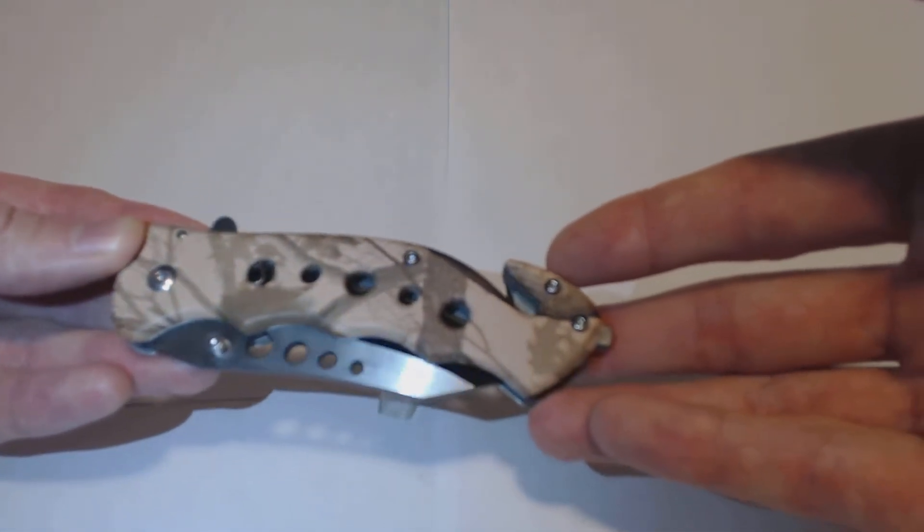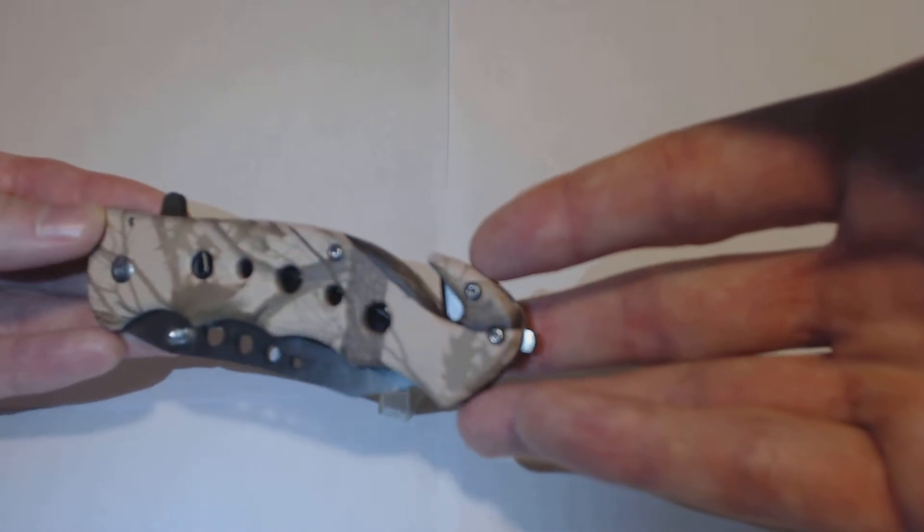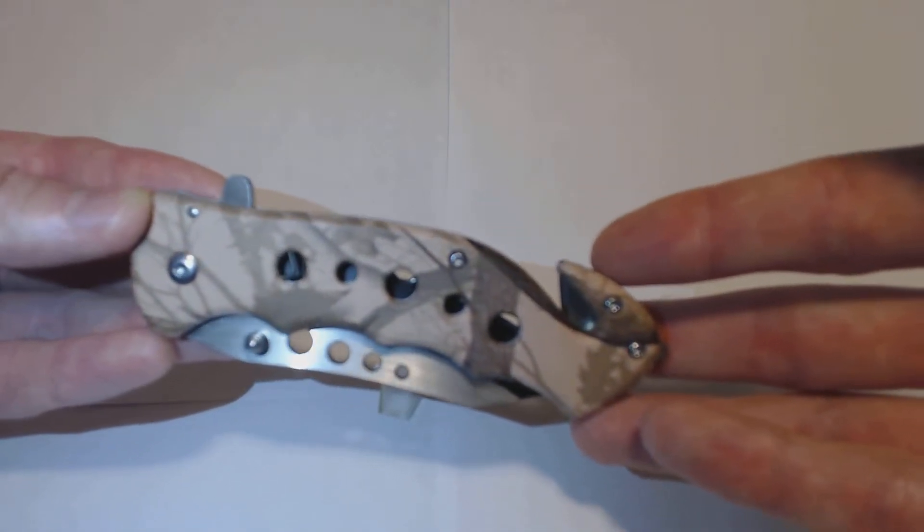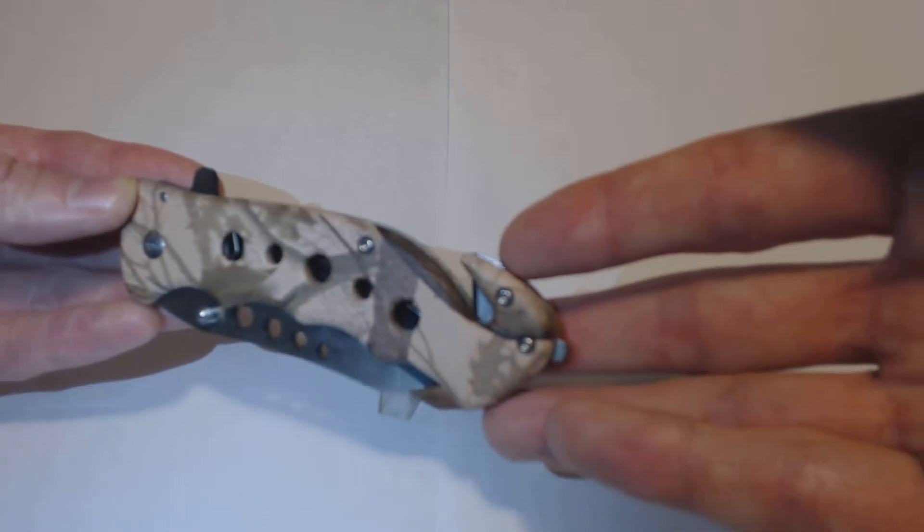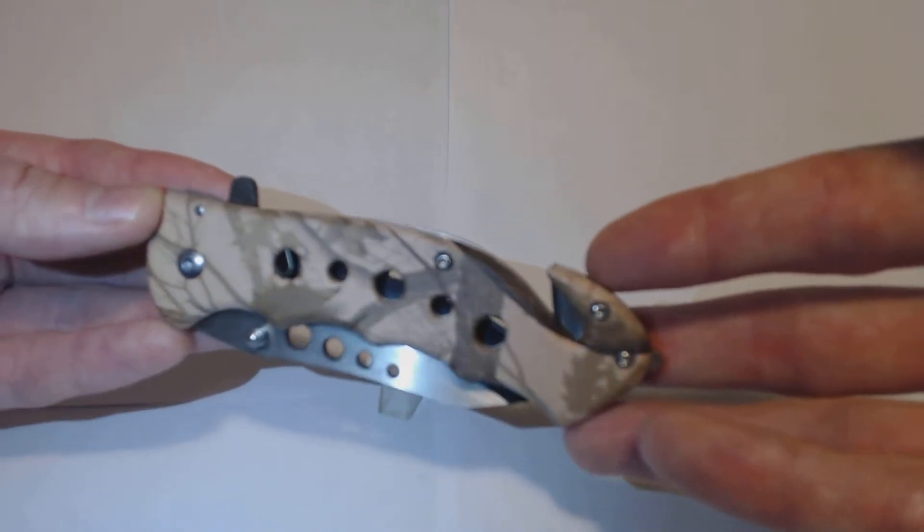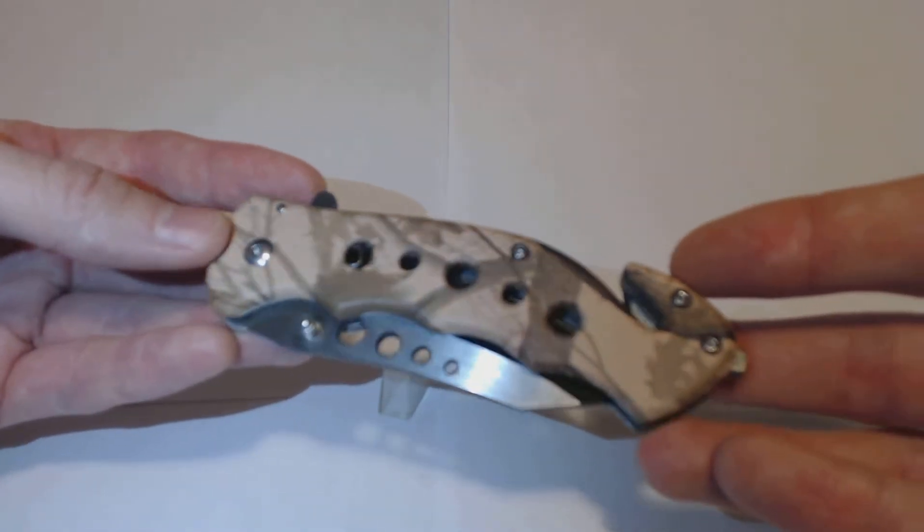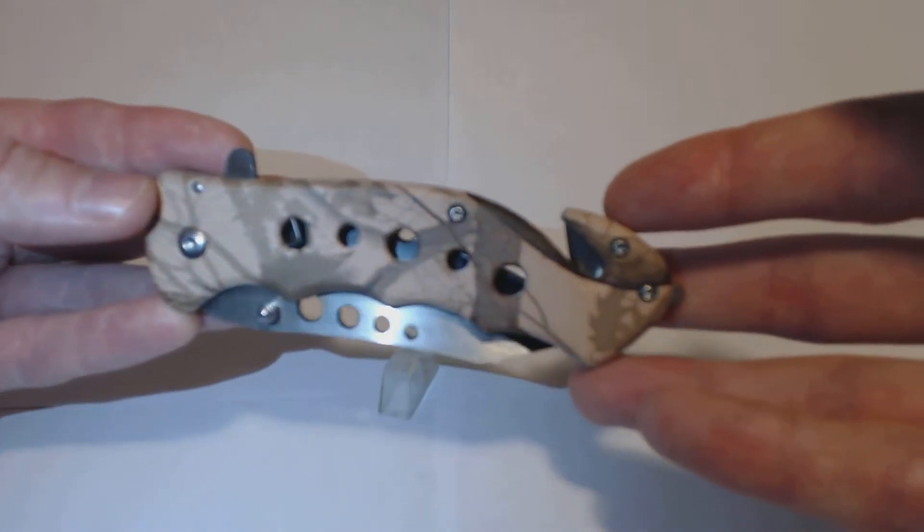This knife measures 4.75 inches when closed. It has a nice two-tone half-serrated stainless steel blade, which I'm going to show you in a minute, and a nice faux cam aluminum handle.